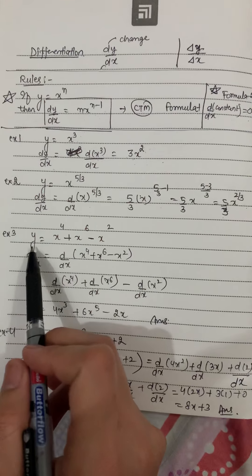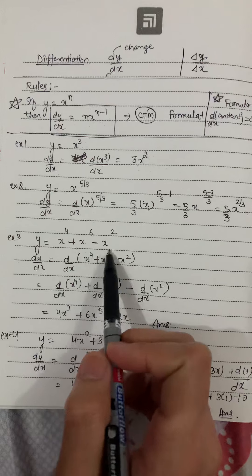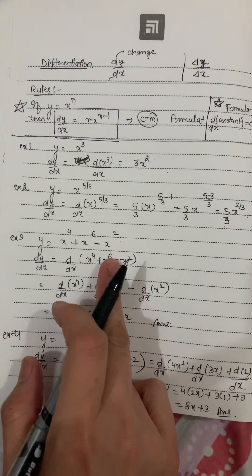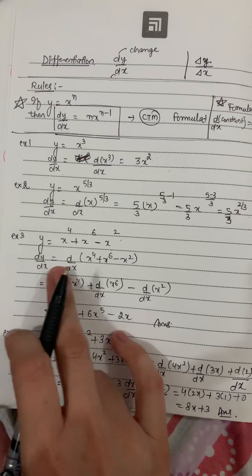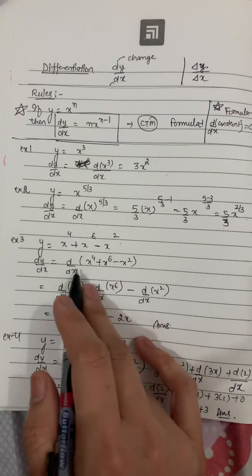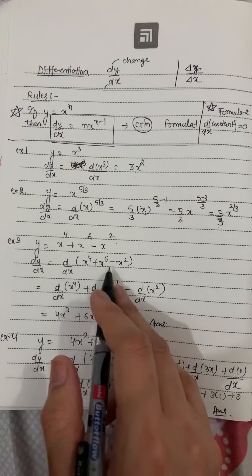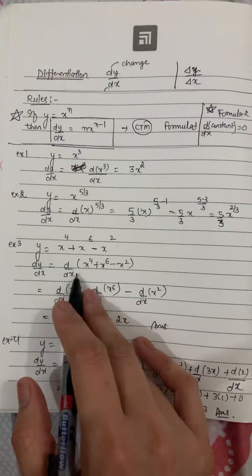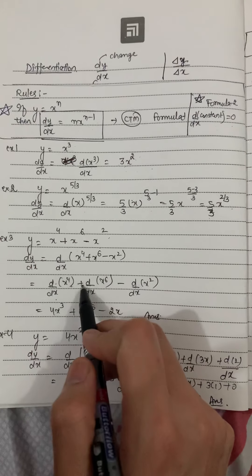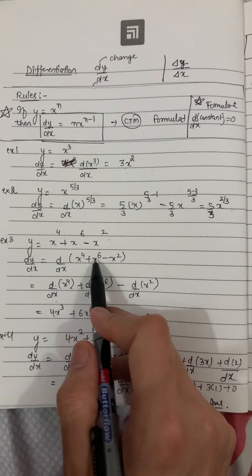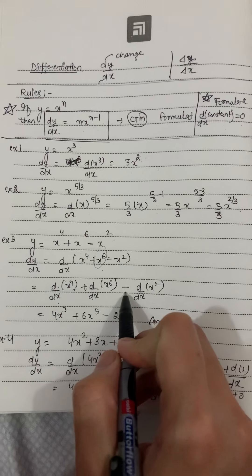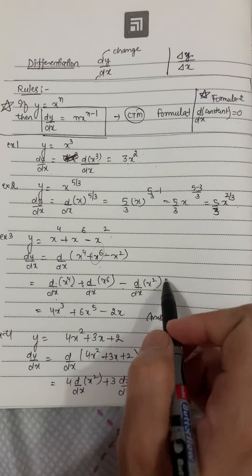One more example: y equals x to the power 4 plus x raised to power 6 minus x squared. To calculate the derivative of this more complex function, we take d by dx on both sides and split it — taking separate derivatives for all three terms. So it will be d by dx of x to the 4, plus d by dx of x to the 6, minus d by dx of x squared.